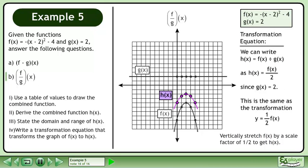We can write h = f ÷ g as h(x) = f(x)/2 since g(x) = 2. This is the same as the transformation y = 1/2 f(x). Vertically stretch f by a scale factor of 1/2 to get h(x).